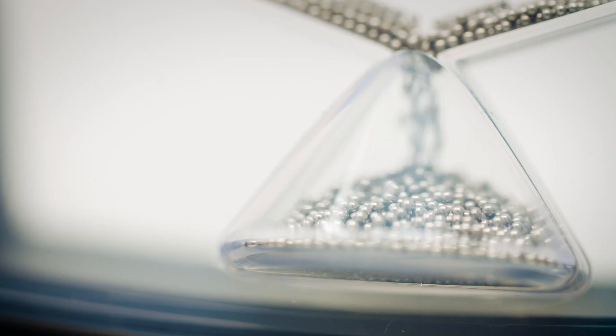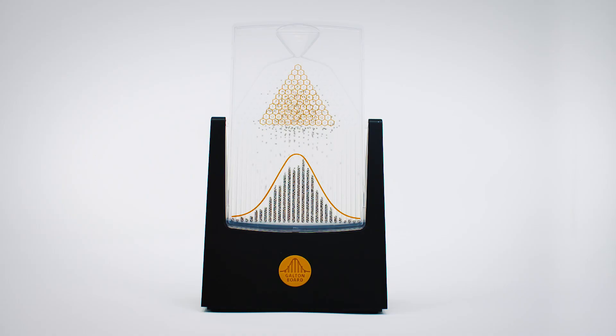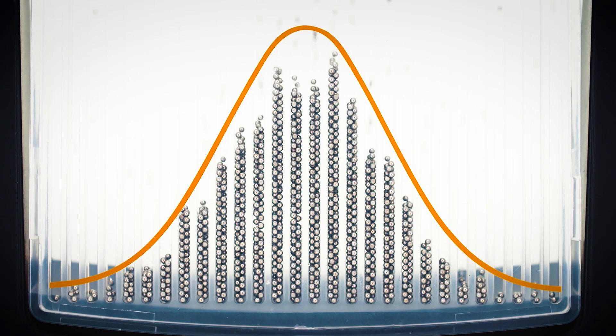What you might do is take the 10% of the beads which ended up furthest to the right and run them down the Galton Board again. What you would see is that these beads would be distributed evenly on either side of the mean — either side of the middle of the Galton Board. That effectively demonstrates this idea of regression to the mean. Just because the beads were far to the right in one run doesn't mean they will be in the second run; they will tend to be clustered around the middle.